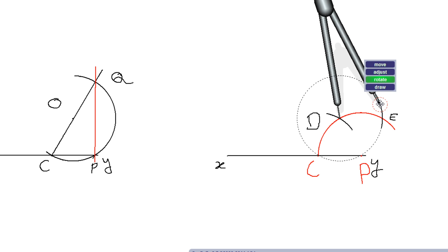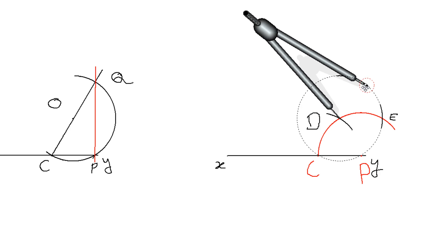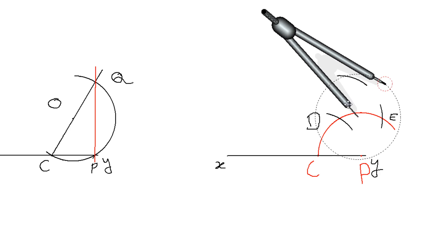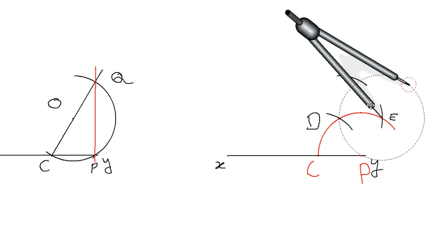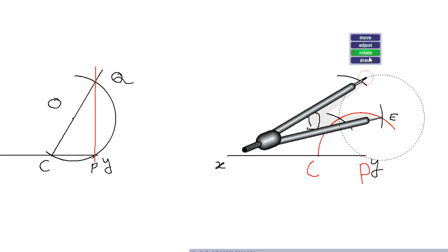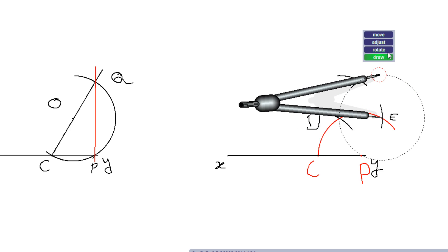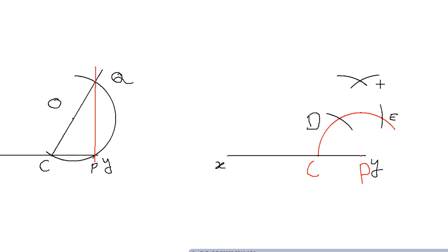Now take the compass — with the same radius or a different radius — and draw arcs on the same side of D and E. Place the compass at point E and draw an arc, then move the compass to point D, make D the center, and draw an arc which will cut the previously drawn arcs at a point. Give this point the name Q.